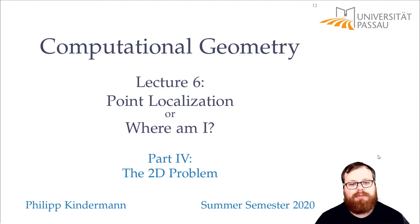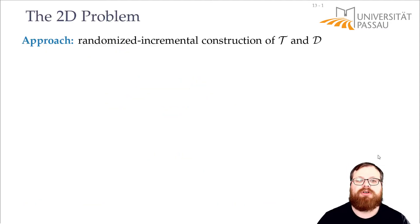We now want to use the same algorithm, slightly adjusted for the 2D problem. So we again want a randomized incremental construction of our trapezoidal map and the data structure that we can use to query it.